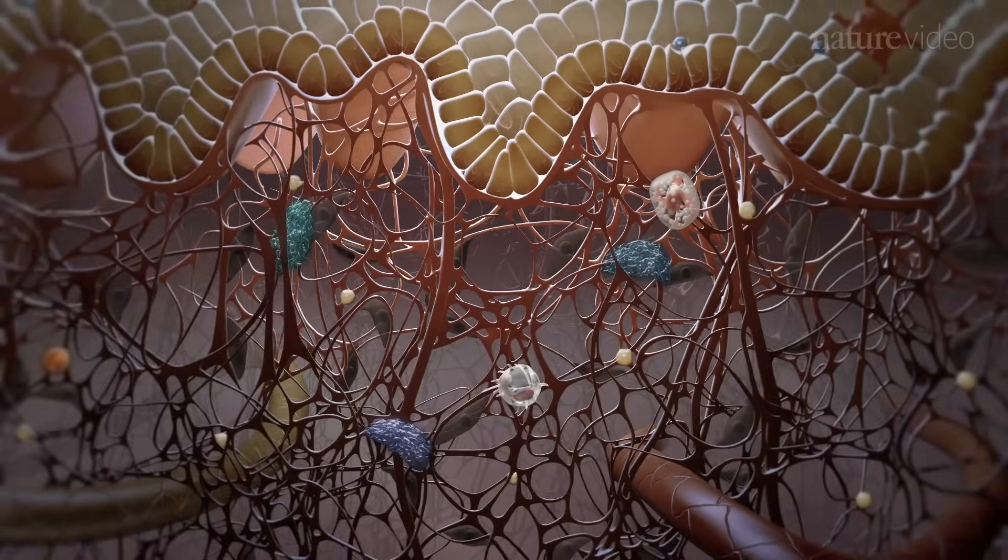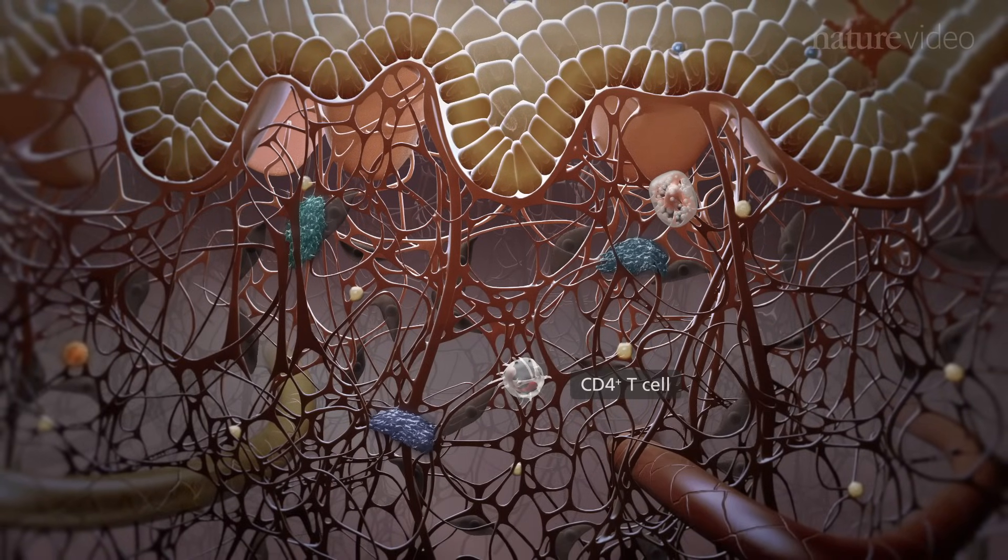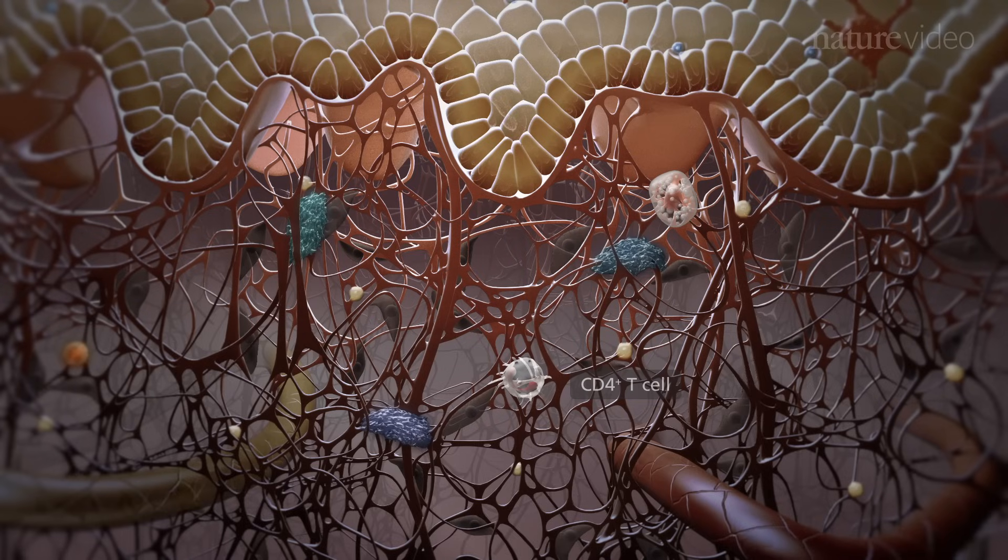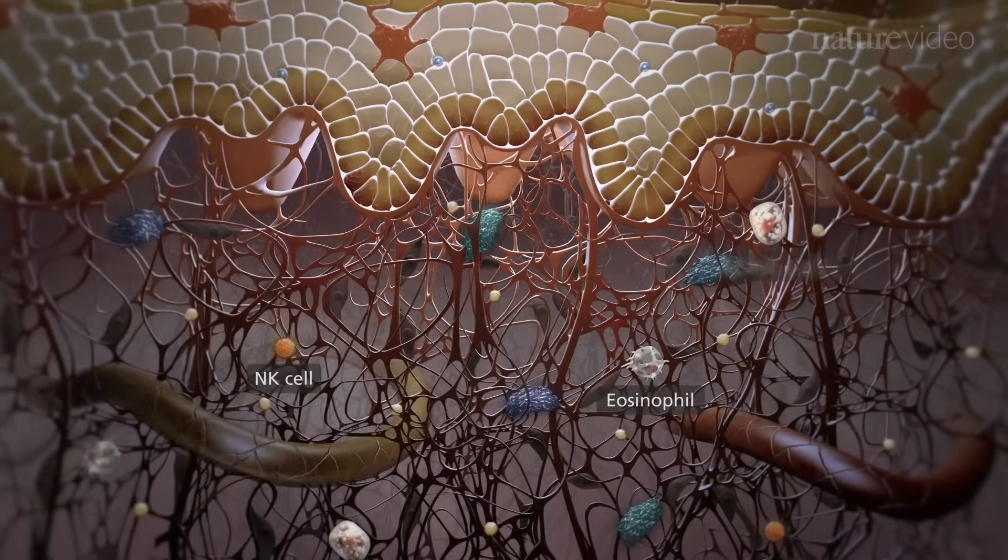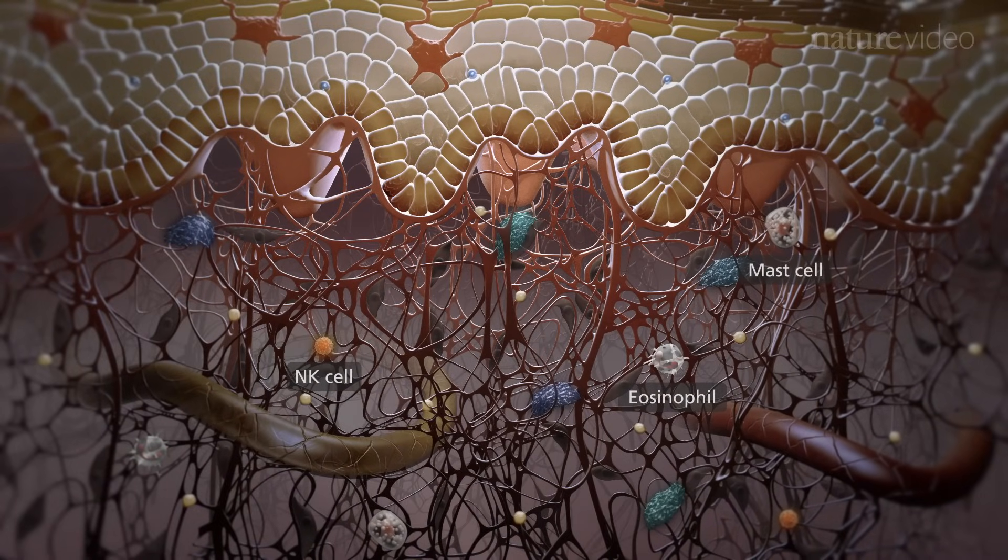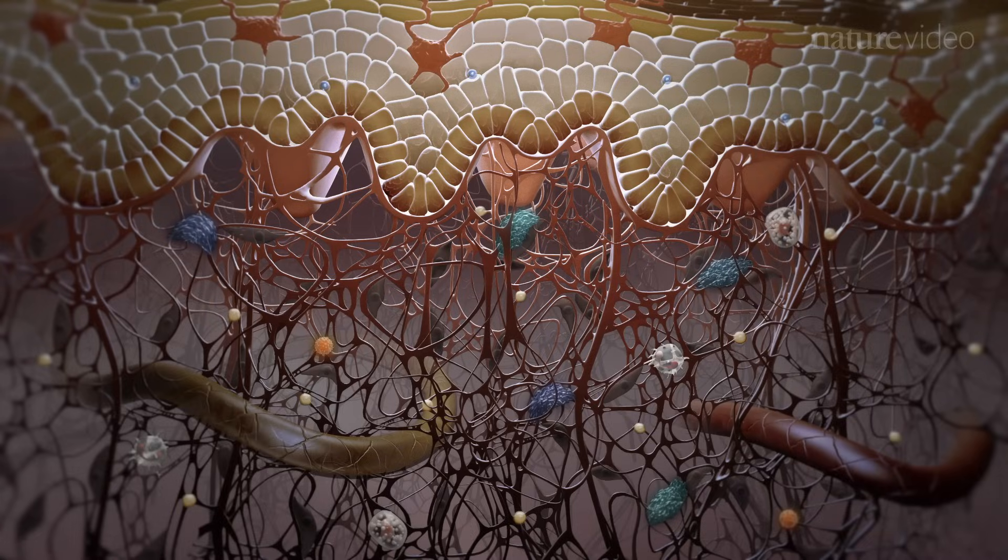T-cells in the dermis are mostly helper CD4 T-cells, which have a more modulatory role in the immune response. A variety of other immune cells, such as natural killer cells, eosinophils and mast cells, are present in the dermis and might be involved in allergic reactions in the skin.